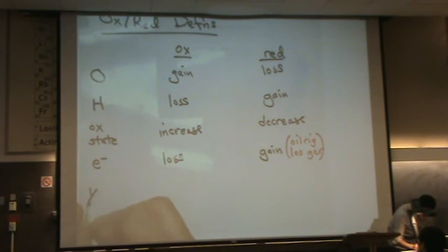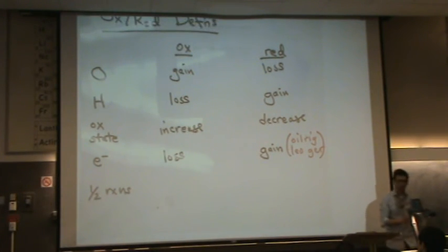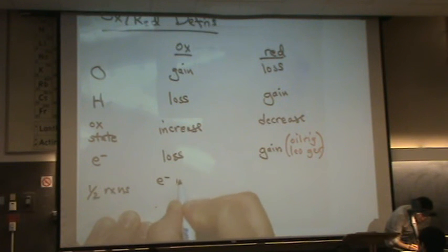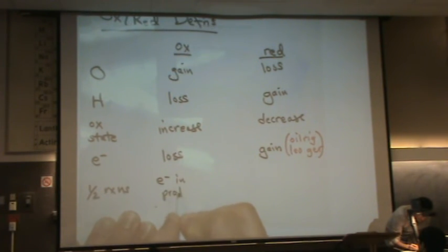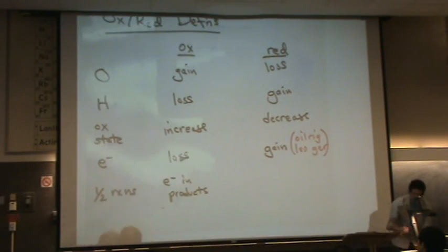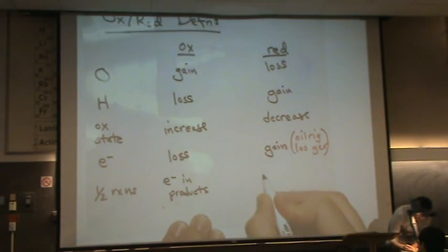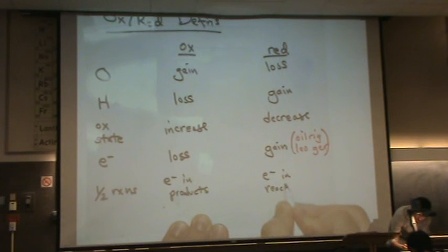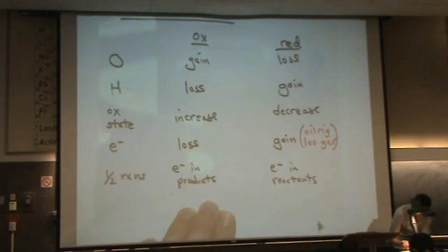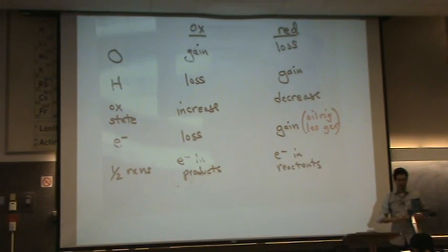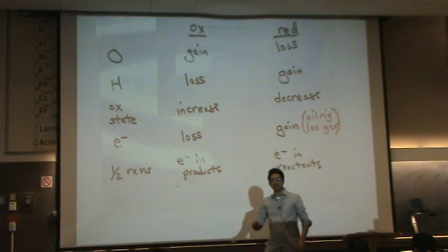And finally, we're going to use this one a lot in 2C. Half reactions. If you look at the half reaction, if you see electrons in the products, that's an oxidation. And if you see electrons in the reactants, that's a reduction. So those are your common definitions.